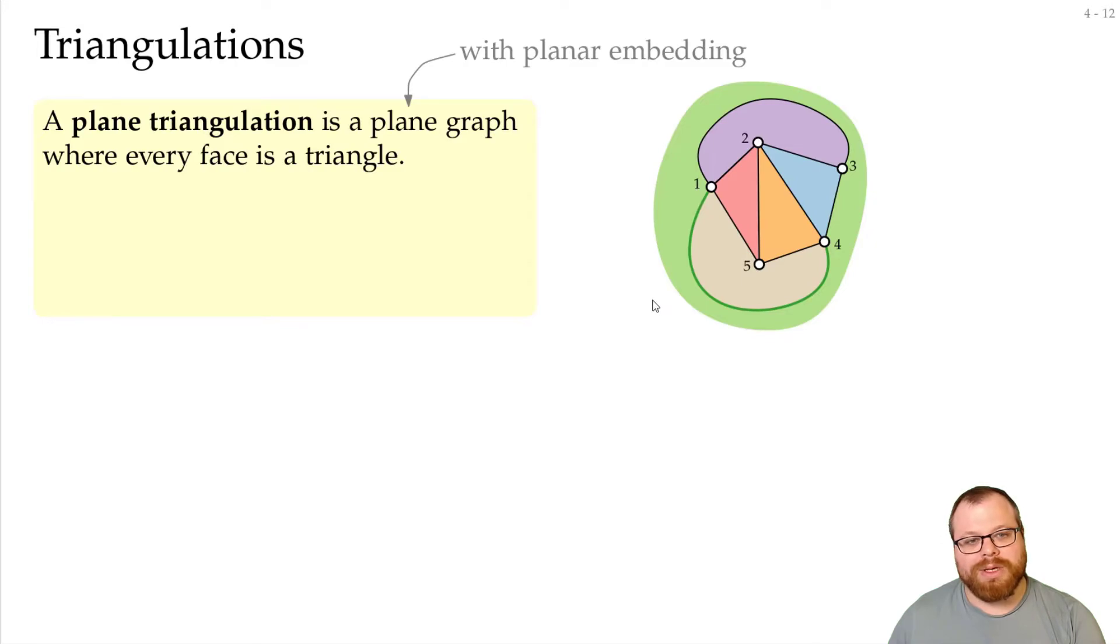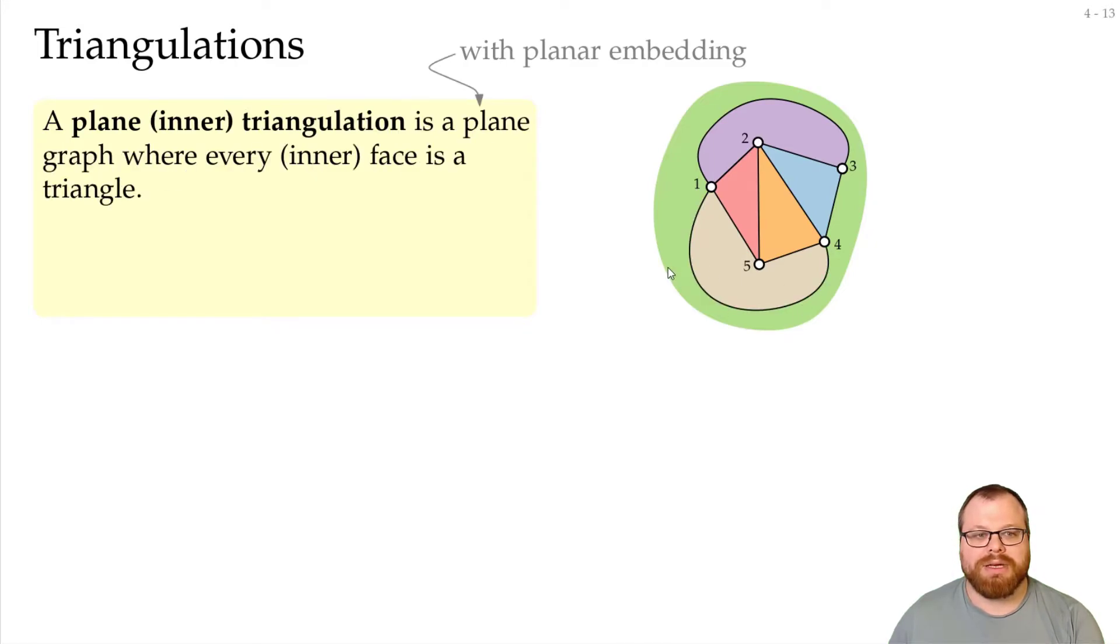Of course, if we don't care about the outer face, then we can also call something a plane inner triangulation. There, we only say that all the inner faces have to be triangles, and the outer face can be as large as we want.